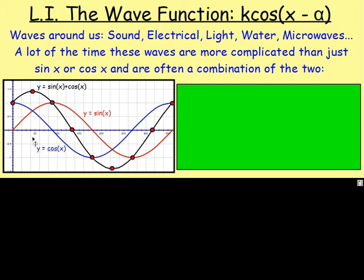For example, this blue line is y equals cos x, the red is y equals sin x, and the black line is what you get if you do sin x plus cos x. So if you add the two waves together, you will end up with this.